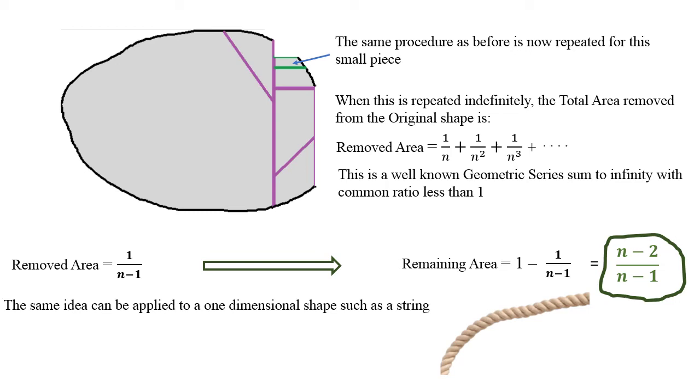The sum can be added to infinity. The reason is clear because the common ratio is 1 over n, and 1 over n is less than 1. Otherwise we can't sum to infinity.